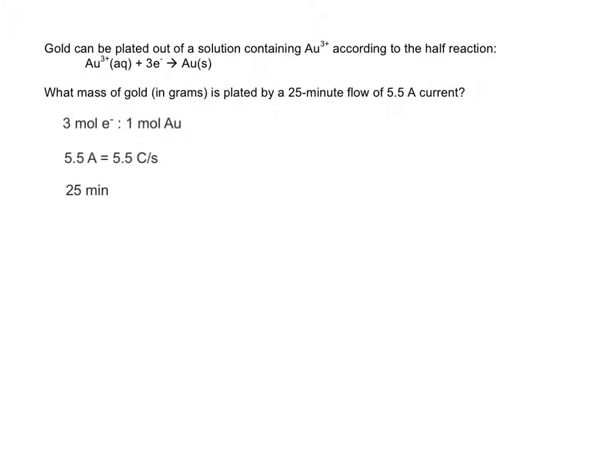25 minutes is where we're going to start, because that's the thing that would potentially vary. The longer this reaction goes, the more gold is going to be plated, the shorter, the less. So 25 minutes, but our current is in coulombs per second, so first we want to do the 25 minutes times 60 seconds in one minute, because that's our conversion factor to seconds. And then we use our current, and that's going to be 5.5 coulombs per one second. And then we know that from Faraday's constant, there are 96,485 coulombs in one mole of electrons, so that will be our conversion factor to get to moles of electrons. And then we just said there's three moles of electrons for every one mole of gold that's plated.